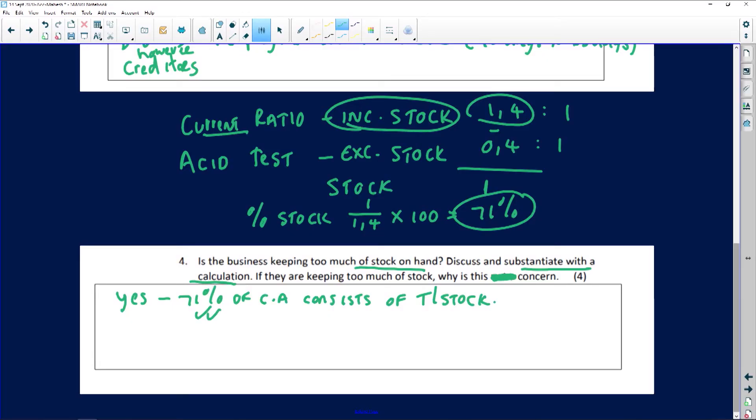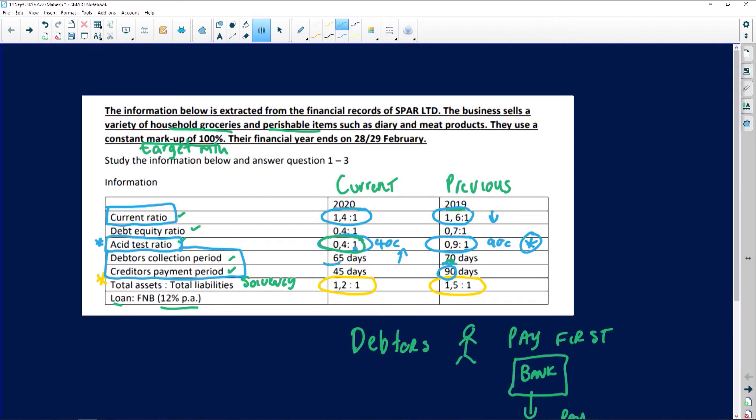Right, now if they are keeping too much of stock, why is this a concern? If you go back to the beginning of the exercise, remember this business sells household groceries which is fine, but they also sell perishable items such as dairy and meat products, and clearly you cannot keep these items on the shelves for too long. So that is why you should not buy too much of stock, you should not keep too much of stock.